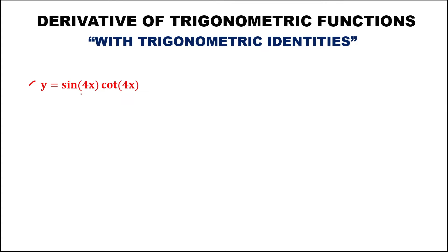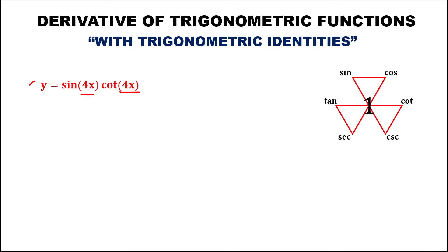Since this given has the same angles, we need to check if there is an identity. Using this figure to find the different fundamental identities — since the given is multiplication, we have sine times cotangent. Multiplying the two functions gives the middle function, which is cosine. So we can reduce this given as y equals cosine 4x.